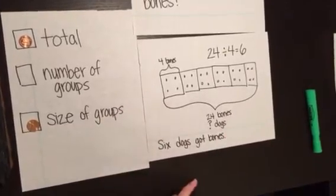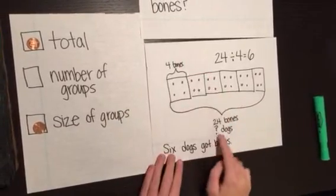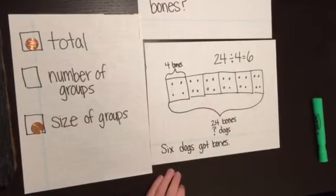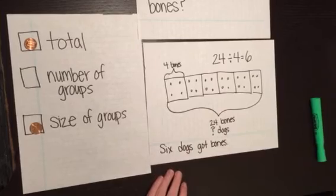If I've done all the parts of my problem, I'm going to have all the parts of my tape diagram labeled, my number sentence, and my word sentence. Make sure you're adding all those parts when you try at home.